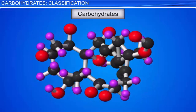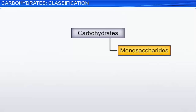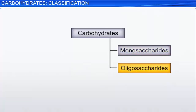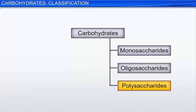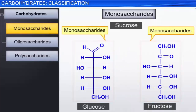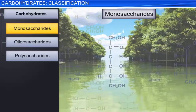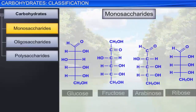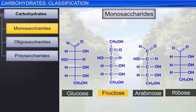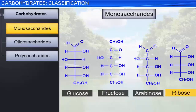Carbohydrates can be classified based on their behavior during hydrolysis. These broad groups include monosaccharides, oligosaccharides, and polysaccharides. Monosaccharides are the basic building blocks of all carbohydrates. Monosaccharides cannot be further hydrolyzed to give a simpler unit. About 20 monosaccharides exist in nature. Glucose, fructose, arabinose, and ribose are some examples of monosaccharides.